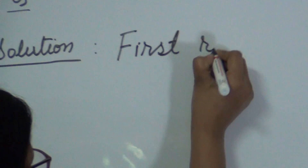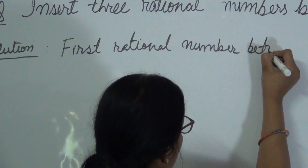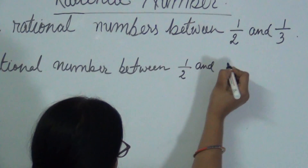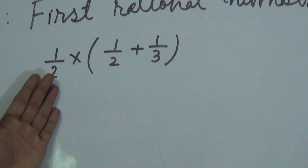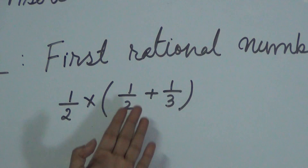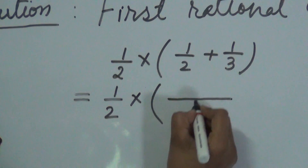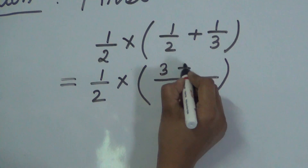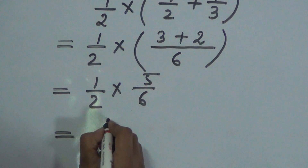Let us start with the solution. The first rational number between 1/2 and 1/3 is found by taking their average: 1/2 multiplied by (1/2 plus 1/3). Here, the LCM of 2 and 3 is 6, so we get 1/2 into (3 plus 2), which is 1/2 into 5/6.